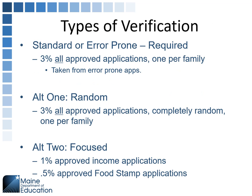There are possibly four types of verification you can complete. The standard or error prone is the required method — that's the first option. For the standard, you're going to verify 3% of all approved applications. It could be an income application or a categorical application approved because there's a food stamp number on it. Make sure you combine applications from one family — if you have multiple applications from one family, only count it one time. This is error prone.